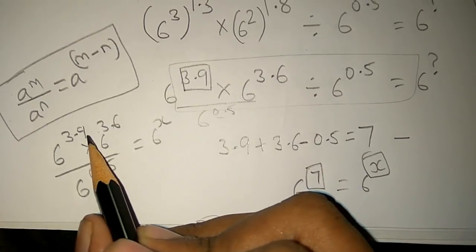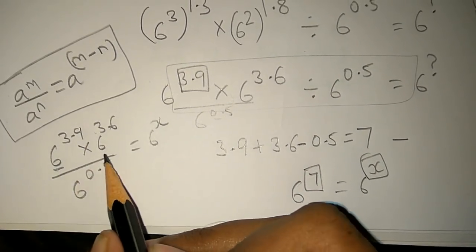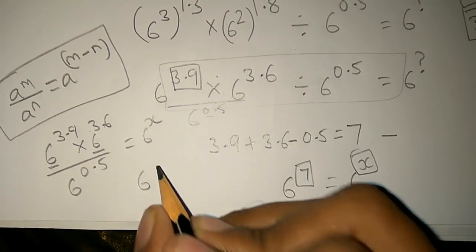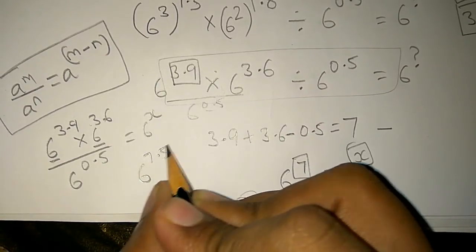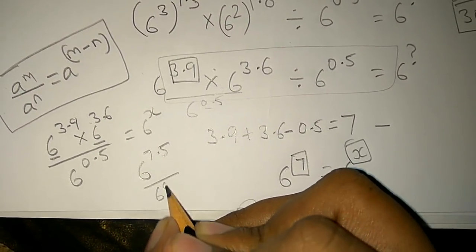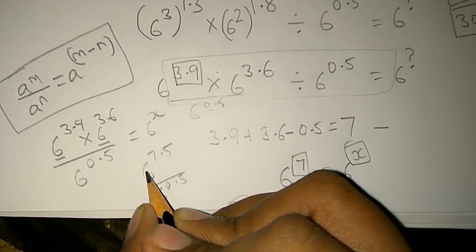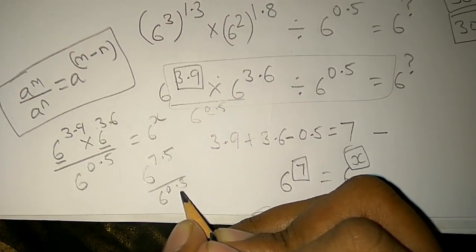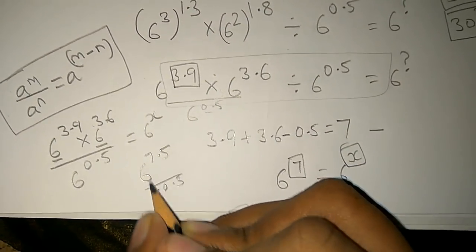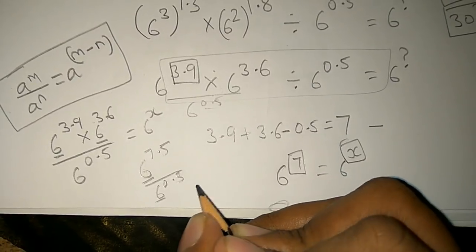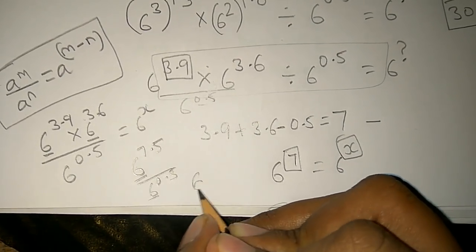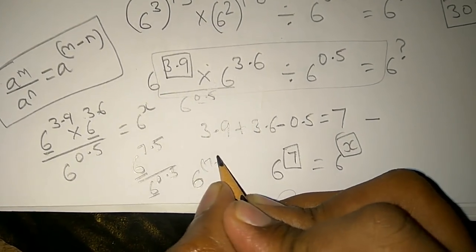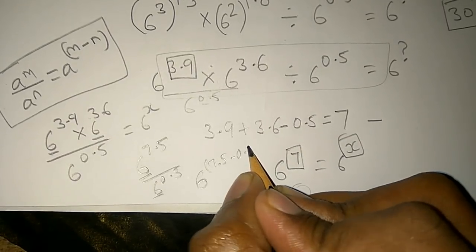When we multiply, we add the exponents to get 6 power 7.5 divided by 6 power 0.5. Using the division rule a power m minus n, we get 6 power 7.5 minus 0.5.